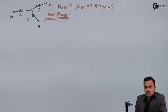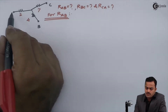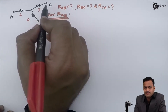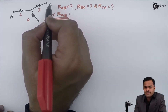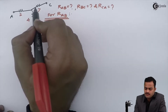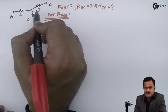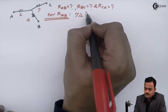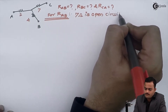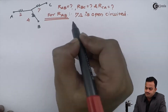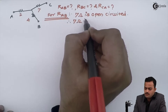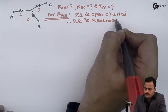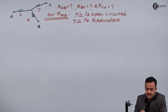When calculating R_ab, the points of interest are A and B. Any other point becomes redundant, so since C is not a point of interest while calculating R_ab, the resistor connected to point C — in this case 7 ohm — will become an open circuit and hence redundant. So 7 ohm is open circuited and therefore a redundant resistor.